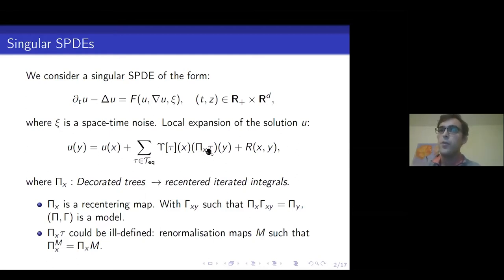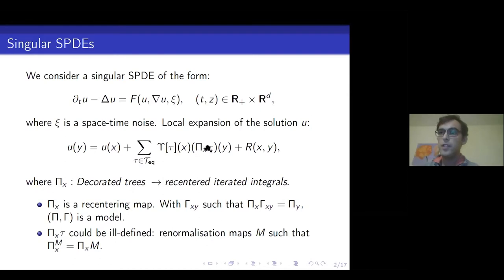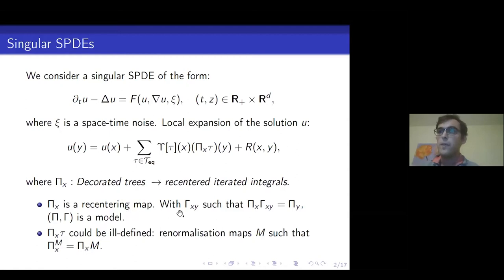Every tree is interpreted as a monomial in (y − x), with a map π_x and coefficients ε_τ(x). These coefficients come from Picard iterations on the equation, producing perturbative expansions whose coefficients depend on the nonlinearity f. This is a Taylor expansion truncated with a remainder small when x is close to y. Crucially, there is a map π_x with base point x sending decorated trees to recentered iterated integrals — stochastic integrals recentered around x. This is like a character, a Feynman rule, on the decorated trees.